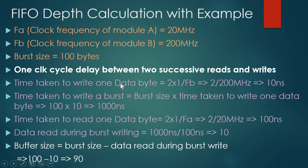In the second step, we calculate the time taken to write the entire burst. We know the burst size and the time taken to write one data byte, so we multiply both. Burst size is 100 and time per byte is 10 nanoseconds, so 100 × 10 = 1000 nanoseconds. We will be able to write the complete burst in 1000 nanoseconds.